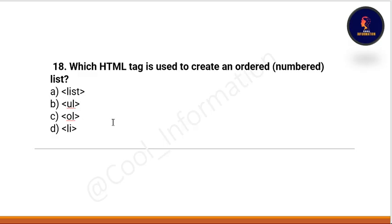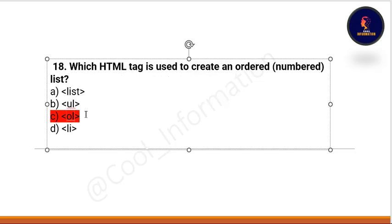Next question: which HTML tag is used to create an ordered list? Options: list, ul, ol, or li. The correct option is C — ol tag. As the name suggests, ol means ordered list. And if the question asks for an unordered list, the correct option would be ul.